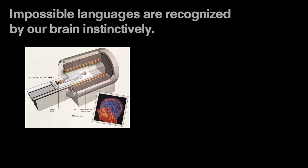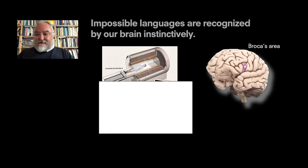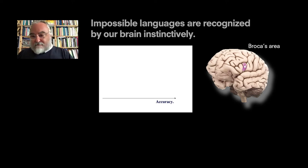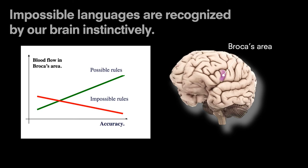We adopted the so-called functional resonance machine to highlight the blood activity of a portion of the brain. We chose Broca's area, which is one of the hubs in the brain for language calculation, production, and perception. We tested the accuracy with which speakers were able to learn possible and impossible rules, and we matched it with blood flow in Broca's area. The results were very neat. With possible rules, the better they were in accuracy, the more blood was called into Broca's area, revealing that Broca's area recognized those kinds of rules and was activated. With impossible rules, the opposite happened — impossible rules turned out to be recognized very differently by the brain.